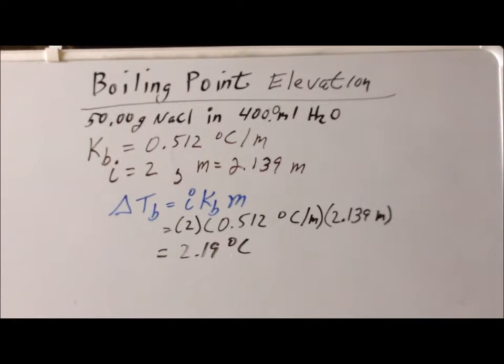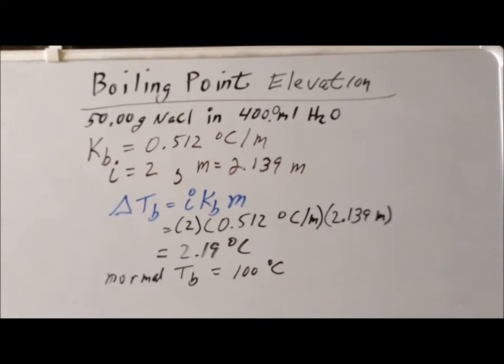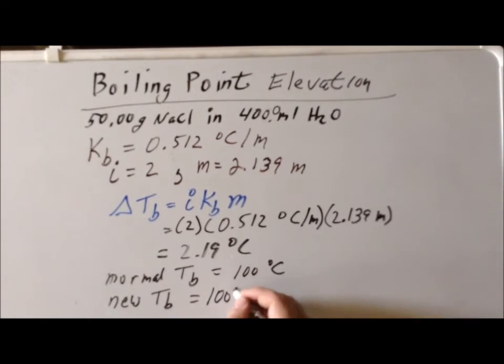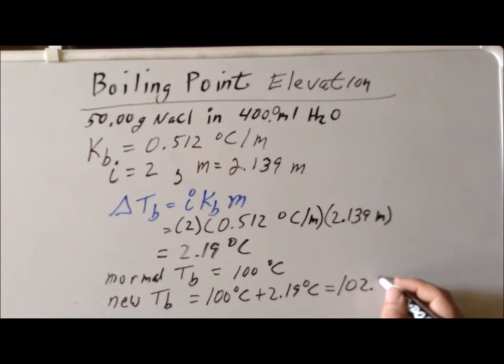It's important at this point to remember that this is the change in the boiling point, not what the boiling point is. We recall that the normal boiling point for H2O is 100 degrees Celsius. We've determined that the boiling point will increase by 2.19 degrees Celsius. So it tells us that the new boiling point of this particular solution is going to be 100 degrees Celsius plus 2.19 degrees Celsius, giving us 102.19 degrees Celsius. This particular solution will have a boiling point of 102.19 degrees Celsius rather than the expected 100 degrees Celsius that we would get for a completely pure solution of H2O.